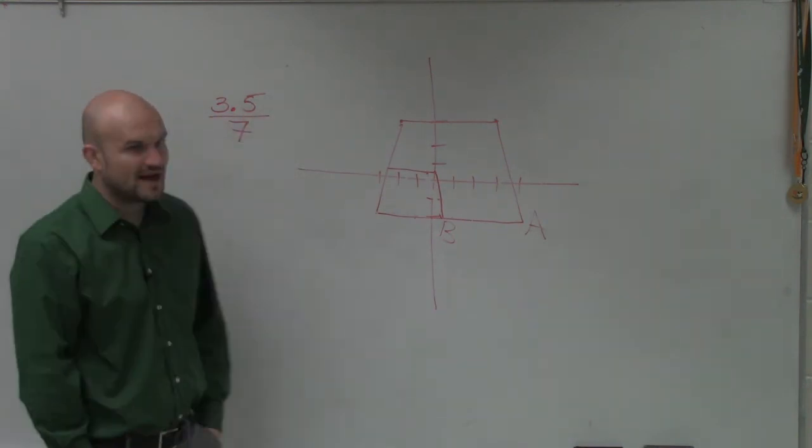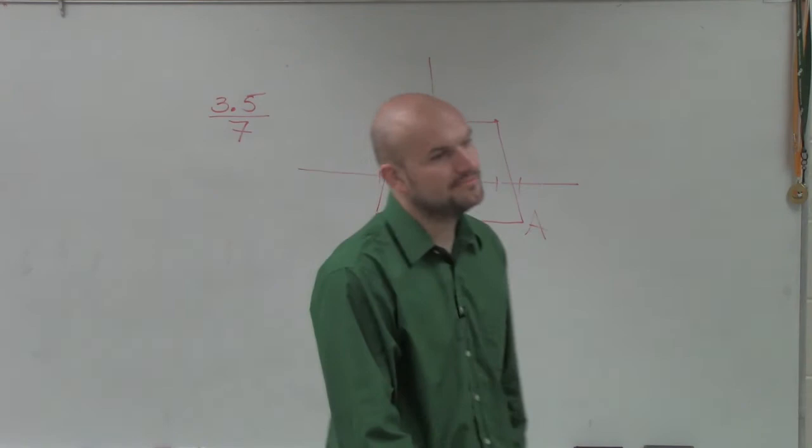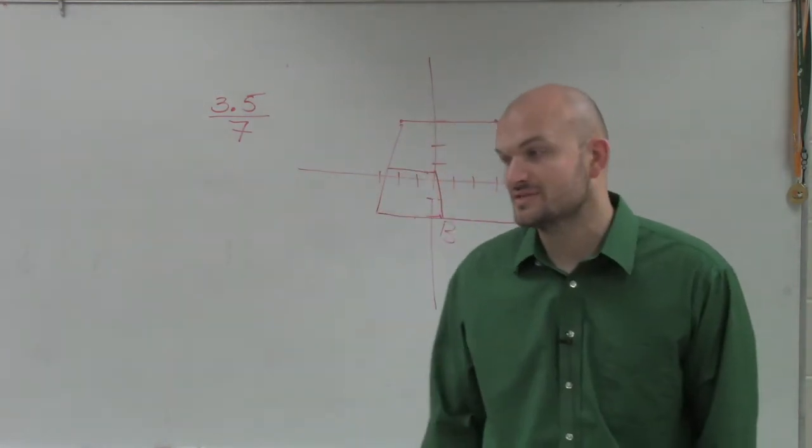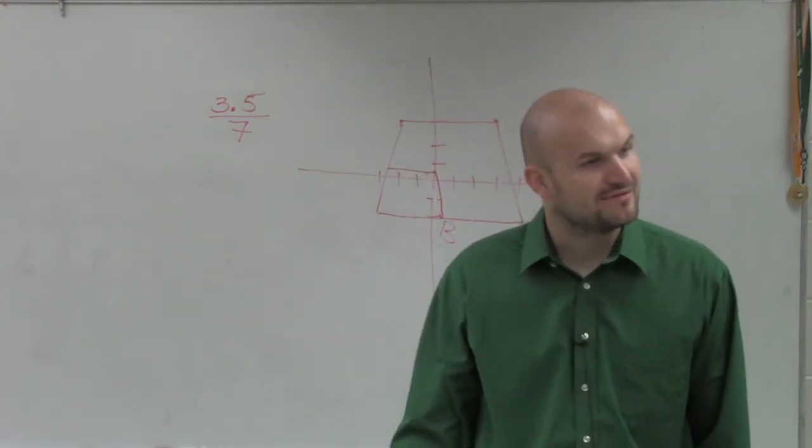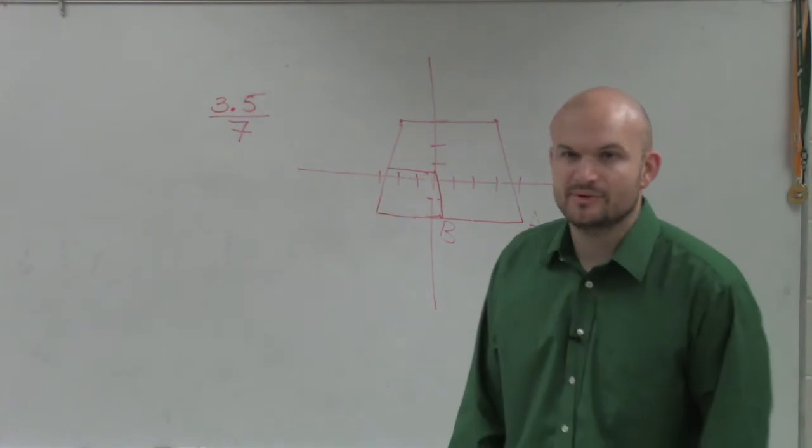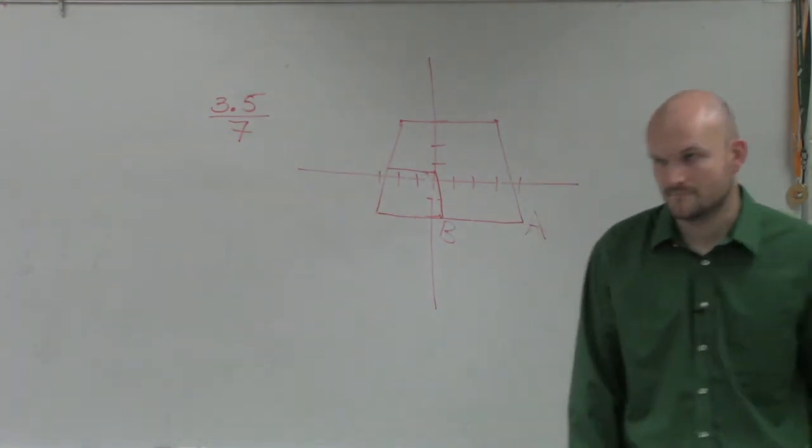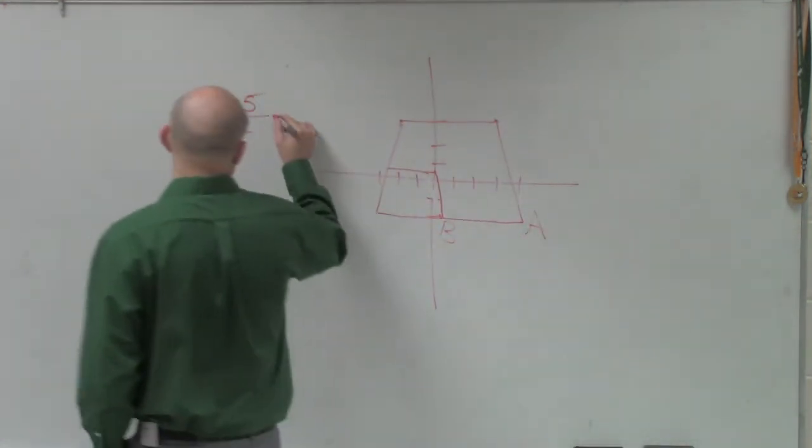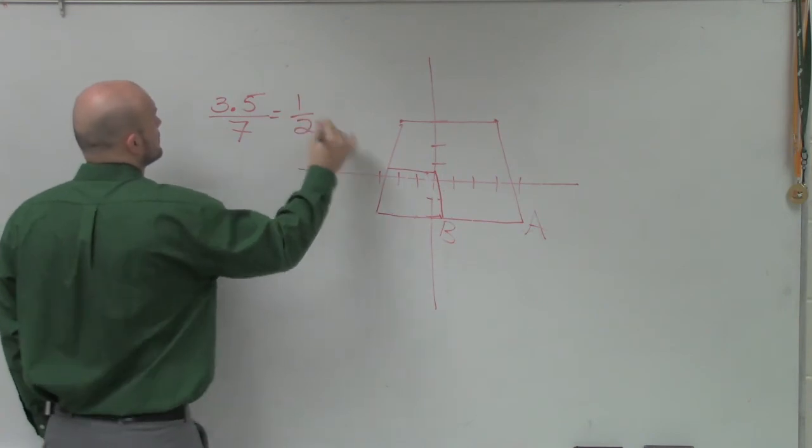So the scale factor from A to B is going to be 3.5 over 7. And then, does 3.5 divide into 7? Can we reduce that? Yeah, we can actually reduce this to 1 half.